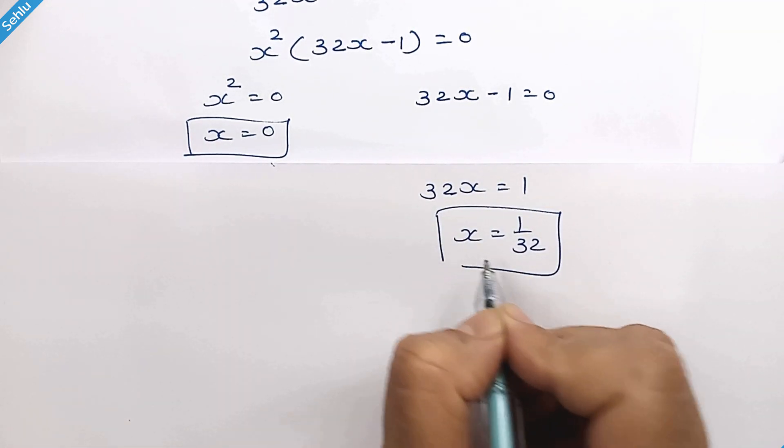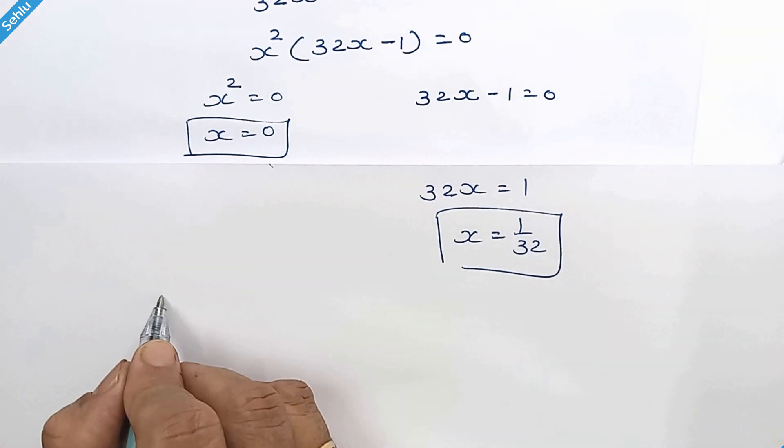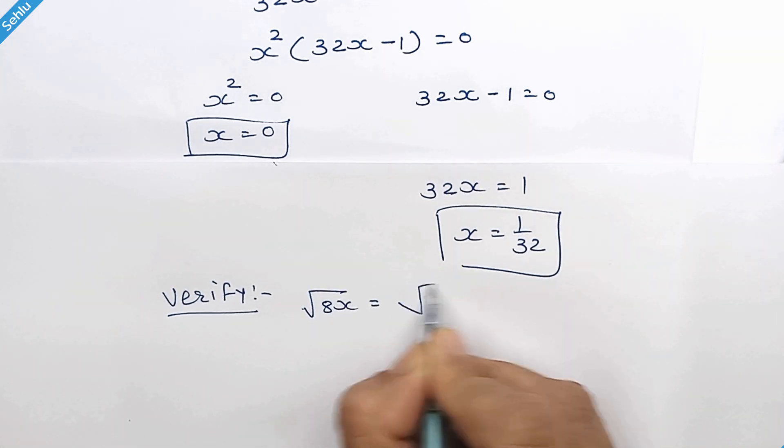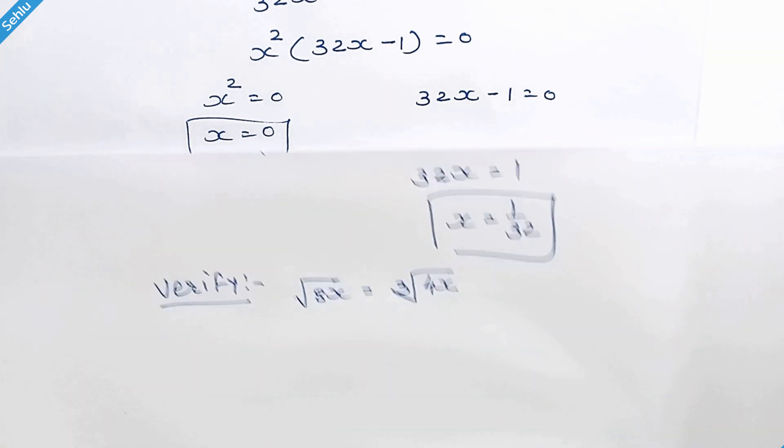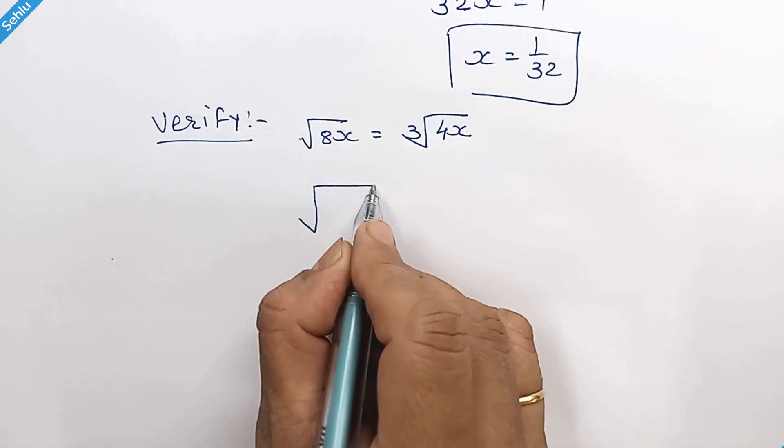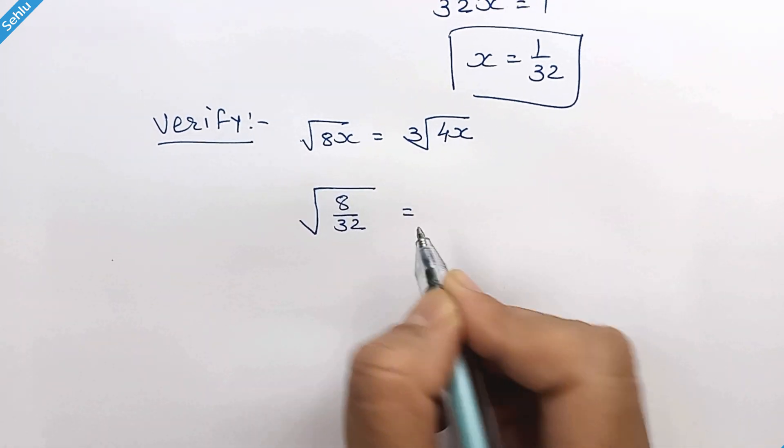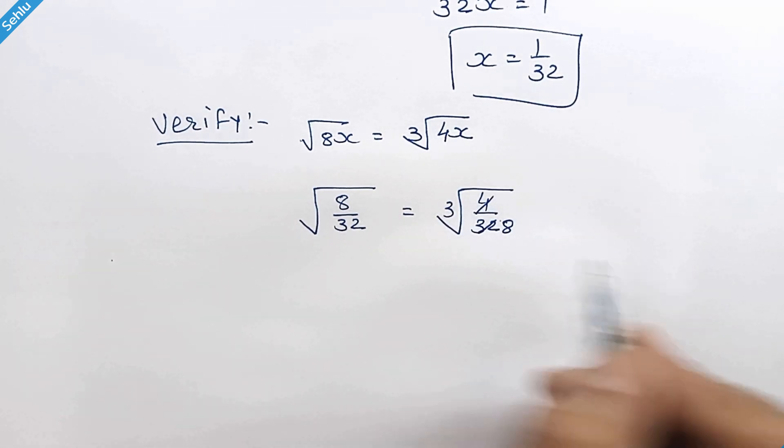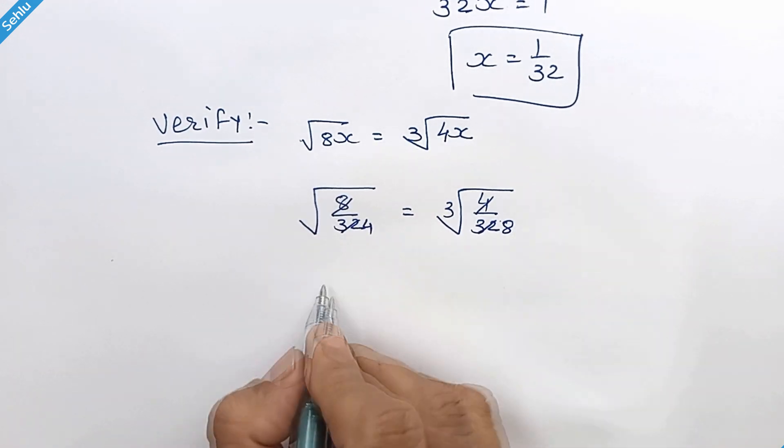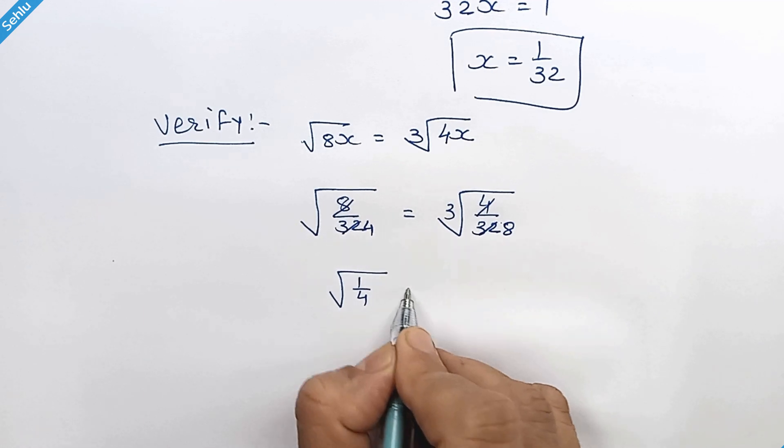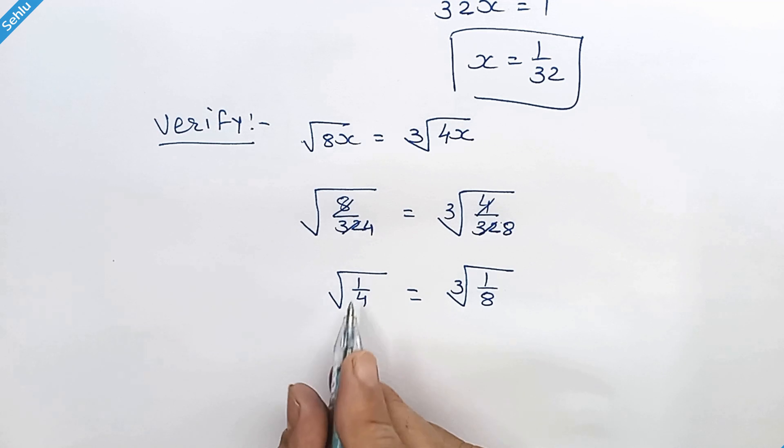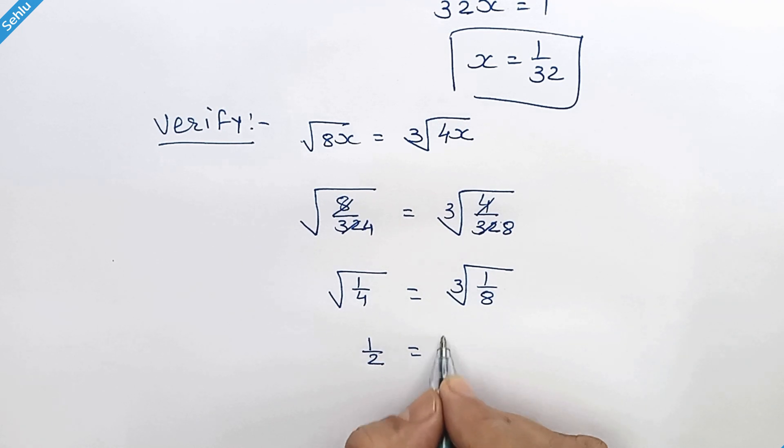So these are the answers. Let's verify this answer. Question is... 4, 8's are 32. And 8, 4's are 32. Now we have square root of 1 over 4 is equal to cube root of 1 over 8. Square root of 1 over 4 is 1 over 2. And cube root of 1 over 8 is 1 over 2.